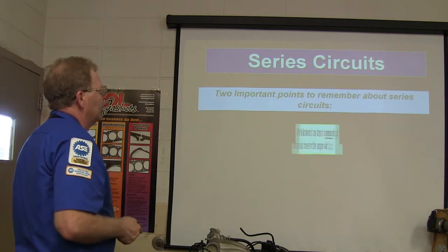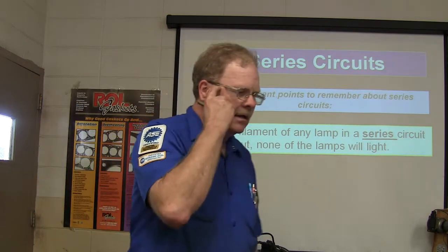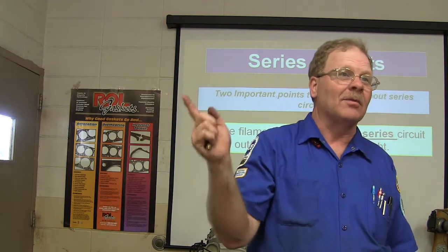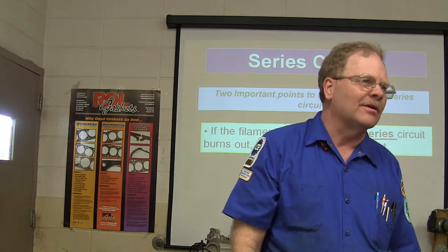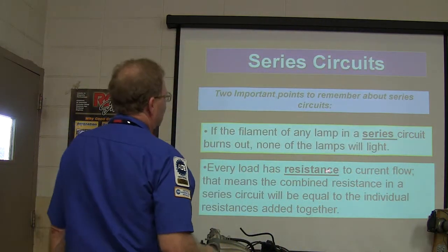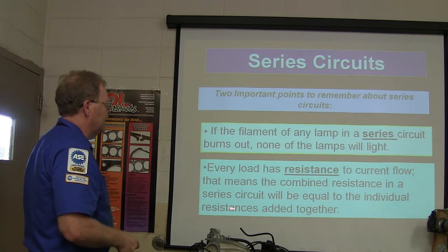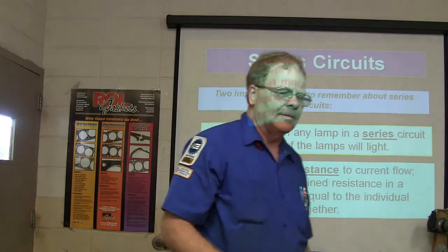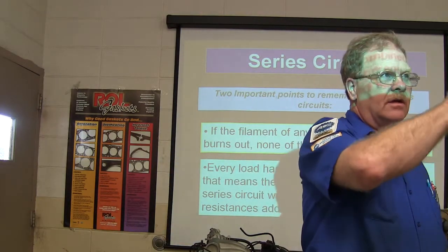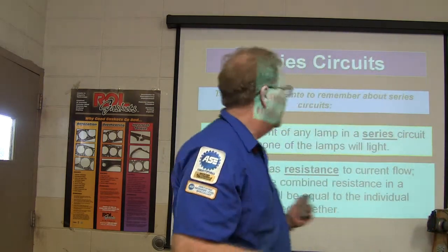If the filament of any lamp in a series circuit burns out, none of the lamps will light. Remember Christmas tree lights? Some were wired in series — if one bulb was out, you had to find which one, which was a real pain. Every load has resistance to current flow, and the combined resistance in a series circuit equals the individual resistances added together. So if you've got a 10, 10, and 10 ohm resistor in series, you're going to have 30 ohms total.